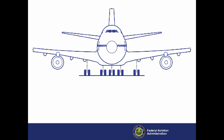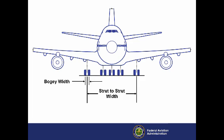For other airplanes, like a commercial passenger jet, you can determine the CMG and MGW from the information in the Airplane Manufacturer's Airplane Characteristics for Airport Planning manuals. If these manuals do not directly list the CMG and MGW, you can calculate the values using dimensions found in various sections of the manuals. As shown on this front-view illustration of an airplane, the MGW is equal to the strut-to-strut width plus the bogie width — which is the center-to-center distance of the tires in the bogie — plus the tire width, because you need to add one-half of the bogie width and one-half of the tire width to each end of the strut-to-strut width.